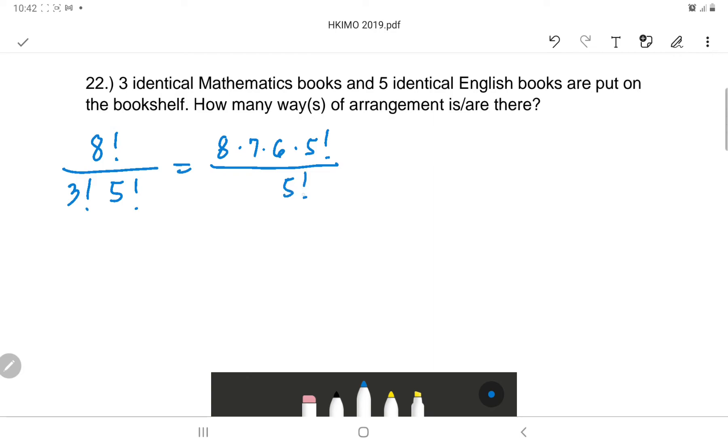the denominator. So five factorial, and then three factorial, that is three times two times one. As I've said, you can cancel five factorial. So you have eight times seven times six, and three times two times one, that...